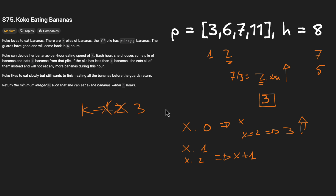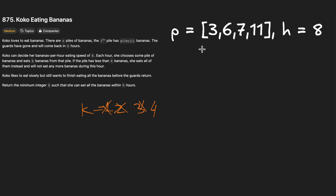Going back to the problem: for seven divided by three we get 2-point-something, rounded up to three. That uses three hours, leaving two hours — not enough to eat the 11-banana pile. So k=3 fails. Let's try k=4. With k=4: pile of three takes one hour (7 left), pile of six takes two hours (5 left), pile of seven takes two hours (3 left), and 11 divided by 4 is about 2.75.